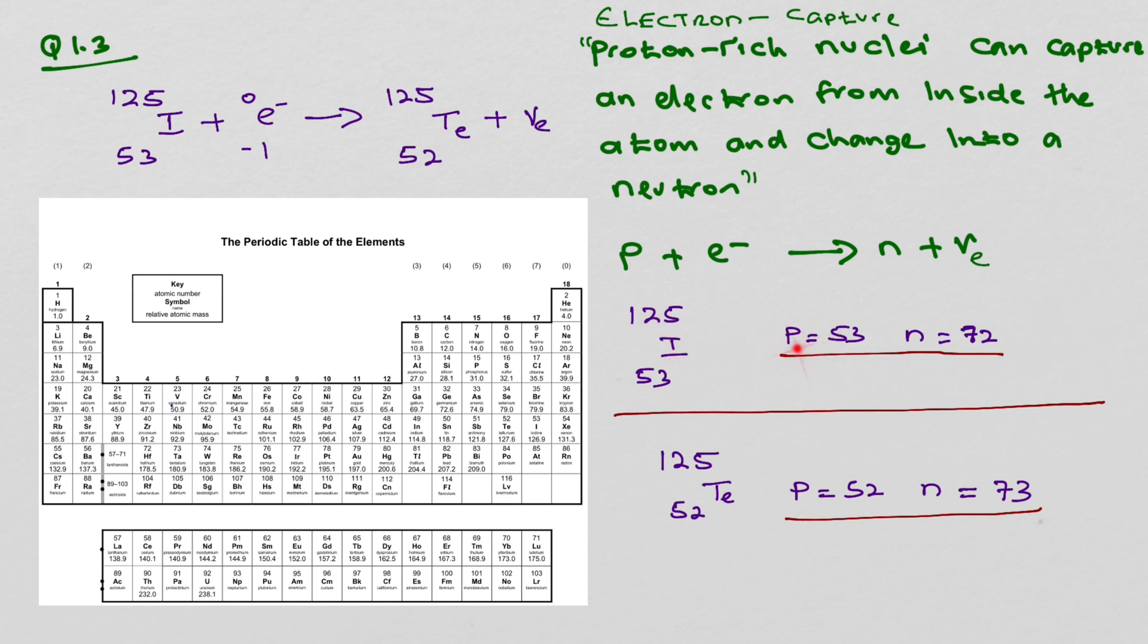Iodine, the proton decreases by 1 to 52, and the neutron increases by 1 to 73, forming tellurium.